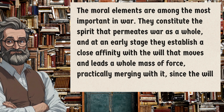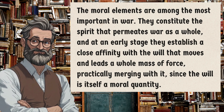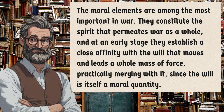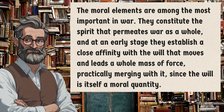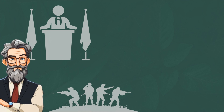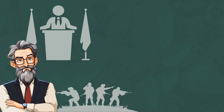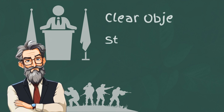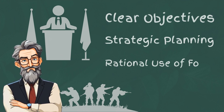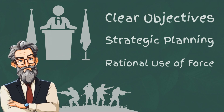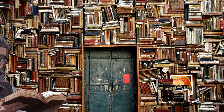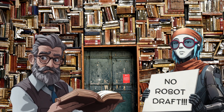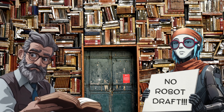But Clausewitz also saw how war would be subordinate to political policy. War is not an end in itself, but a tool to achieve political objectives — it must be guided by reason and serve the interests of the state. This tendency is primarily the domain of the government, which sets the political goals and provides the strategic direction for the war effort. It emphasizes the need for clear objectives, strategic planning, and the rational use of military force. As discussed, subordination to politics has caused a number of military actions to be restricted, such as the Vietnam War and wars in Afghanistan.